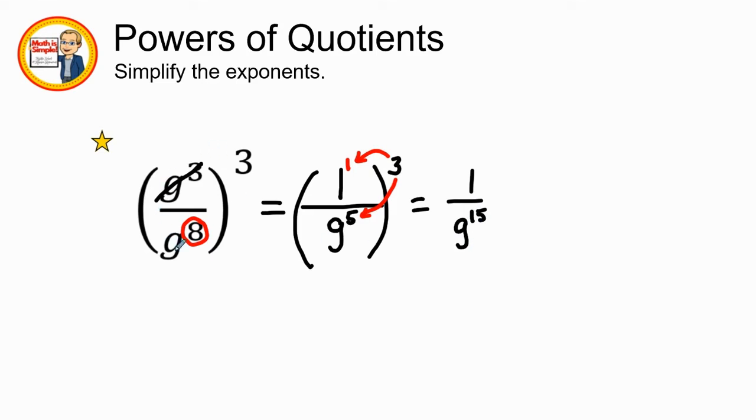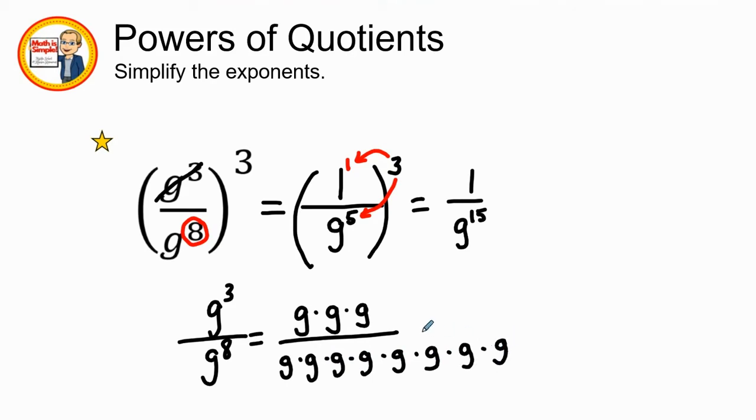One thing you might have got caught up on is that if I put this g to the 3rd over g to the 8th in expanded form, it would be g times g times g over g times g eight times. So if I cancel the g with a g, that gives me 1. That leaves me with 1 left over on the top and g to the 5th on the bottom or in my denominator. So that's how I got 1 over g to the 5th.